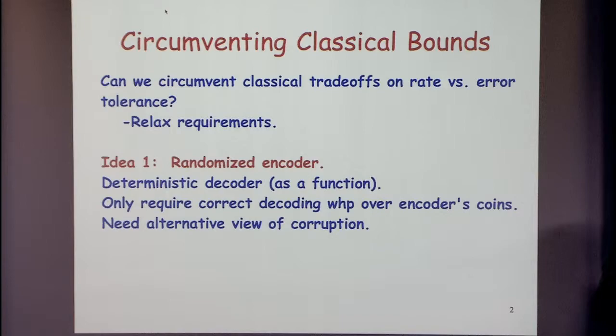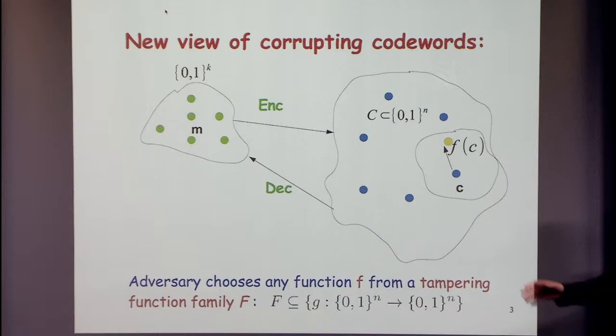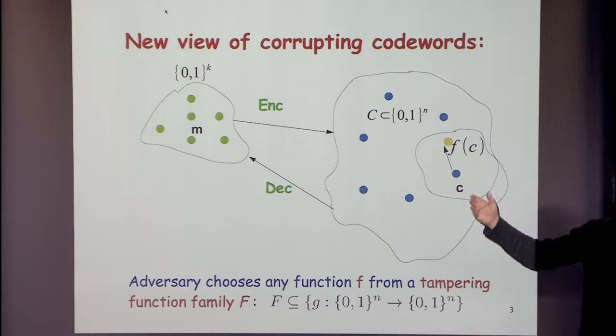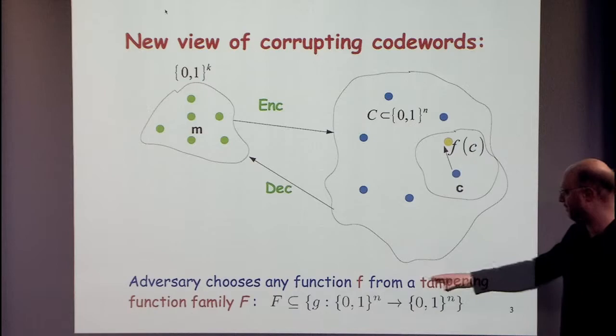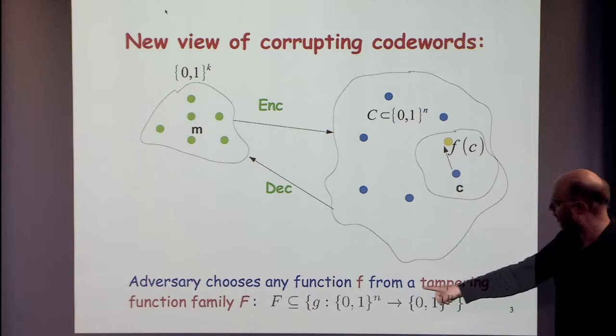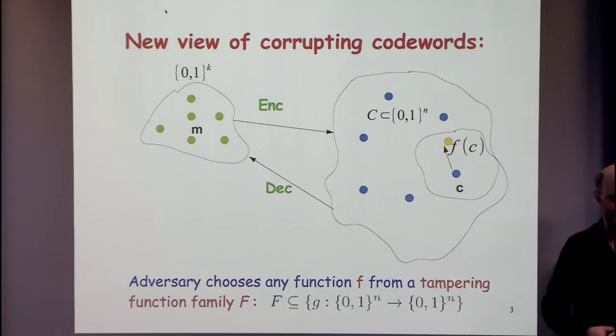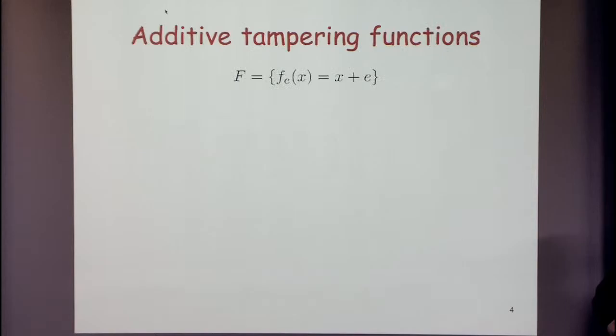To explain that, we need an alternative view of corruption. We imagine an adversary deciding in advance: if codeword c is sent, I'll corrupt it to f(c), doing it for each codeword. This defines a tampering function from n bits to n bits. We only allow the adversary to choose f from some tampering function family — a subset of all functions from n bits to n bits.